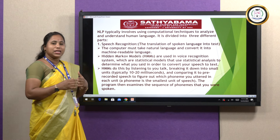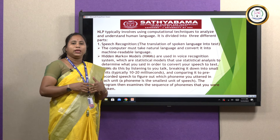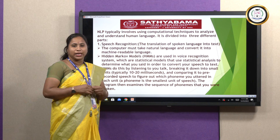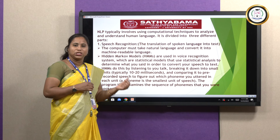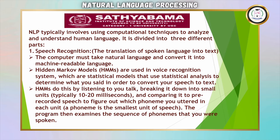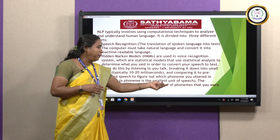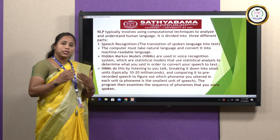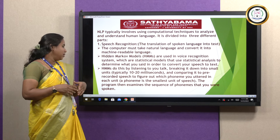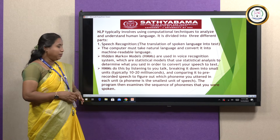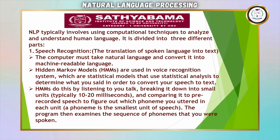It takes a fraction of seconds — mainly 10 to 20 milliseconds — to convert speech into text, compare the received data, pre-process the speech or text, and figure out the meaning. That is called a phoneme — the smallest unit of speech representing what the speaker says. The program then examines the sequence of phonemes that the user spoke with the system.